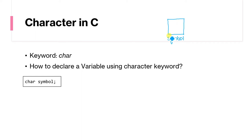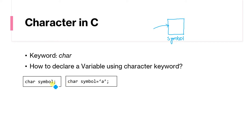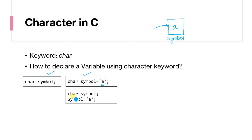We can store a single character in this particular space. There are two ways to do this. The first way is to declare and initialize in one line: char symbol = 'a'. This means we create a character variable named symbol and store 'a' inside it. The second way is to declare on the first line — char symbol — and assign the value on the second line: symbol = 'a'.